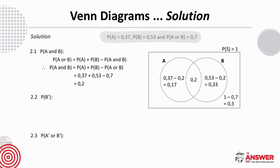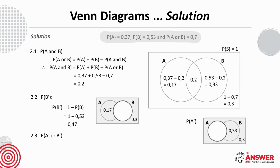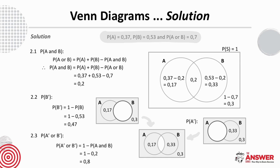For 2.2, B and not B are complementary events, so the probability of not B is either everything outside of B or 1 minus the probability of B. For 2.3, not A or not B is everything except the overlap A and B, so you can either calculate the probability as 1 minus 0.2 or by adding those areas.